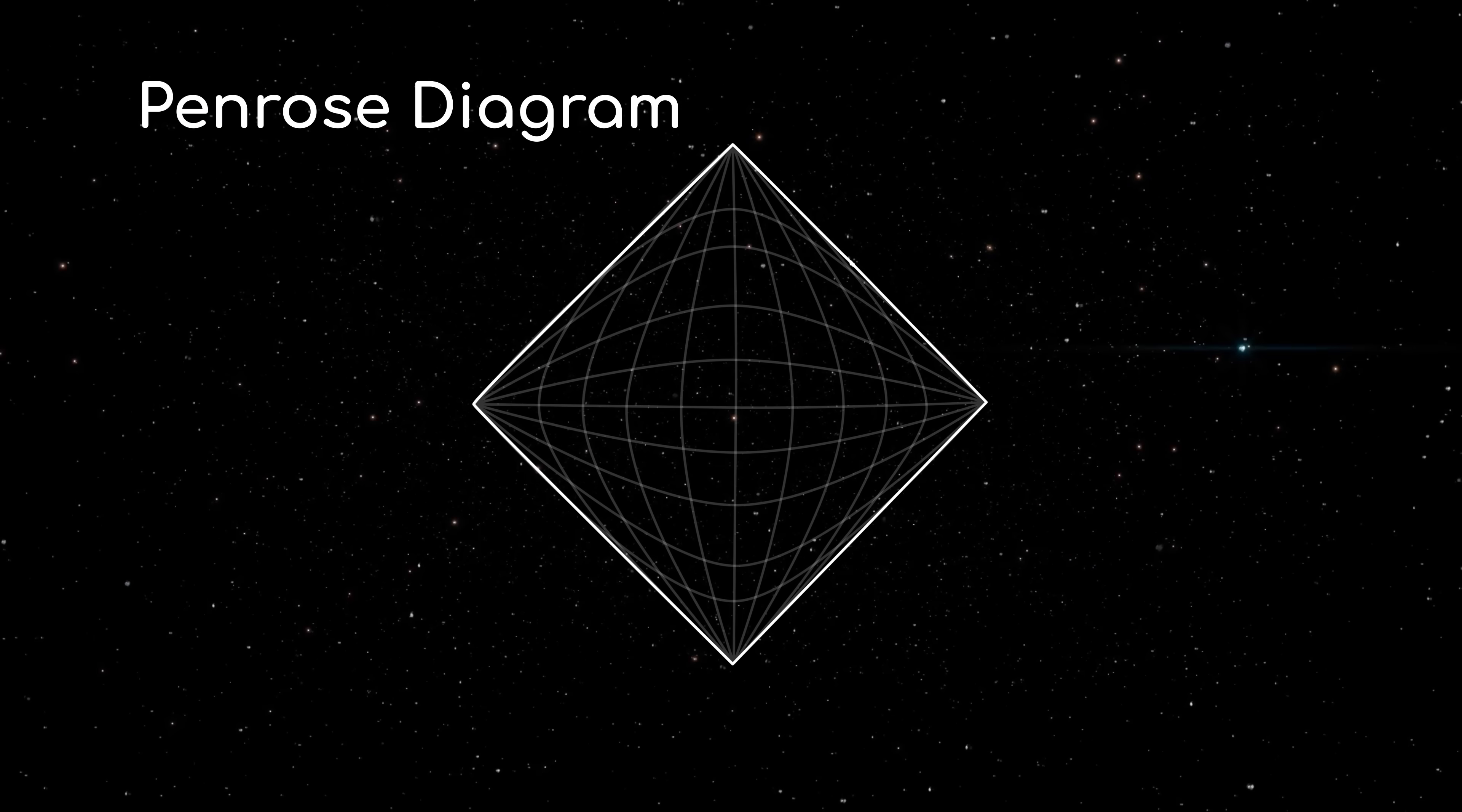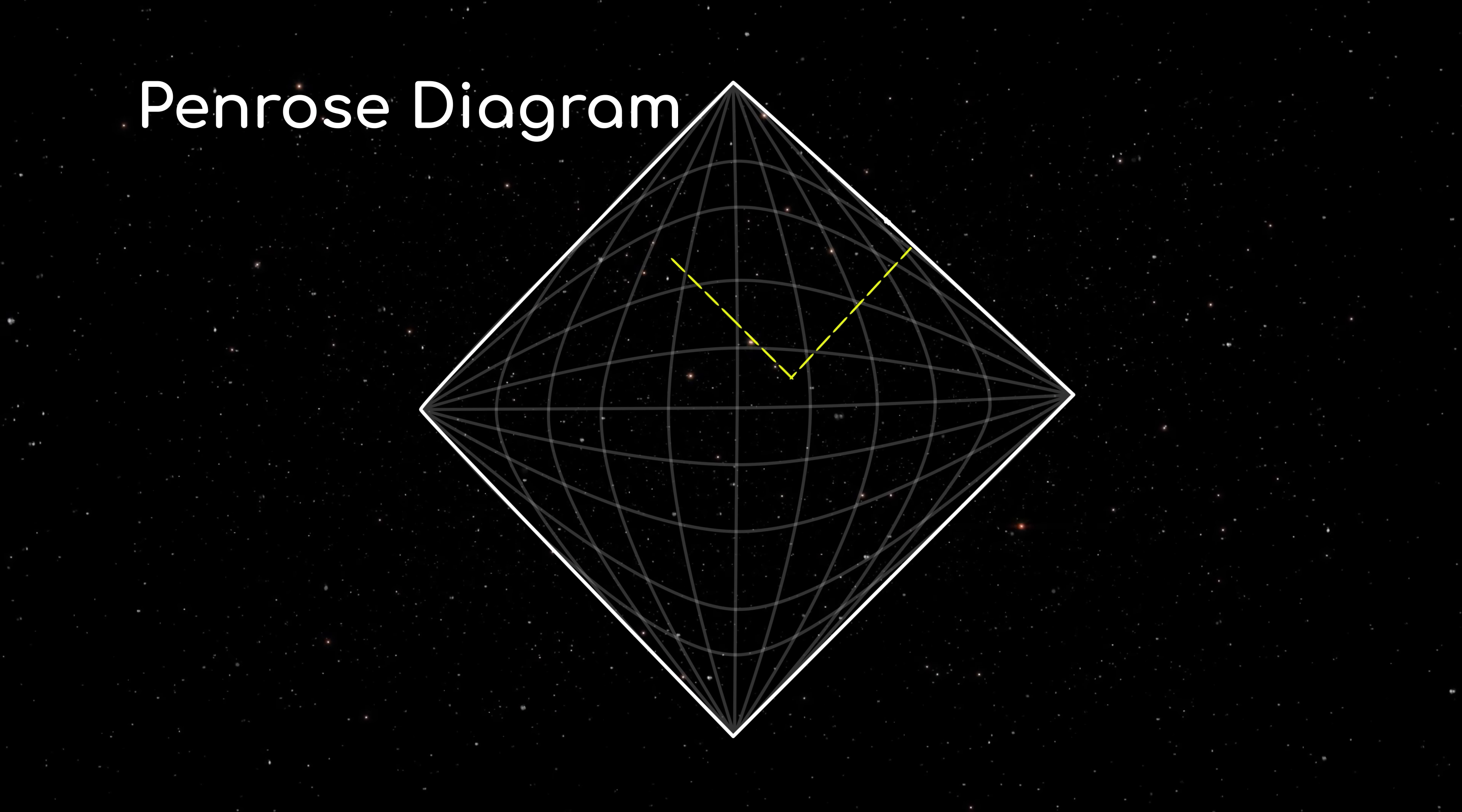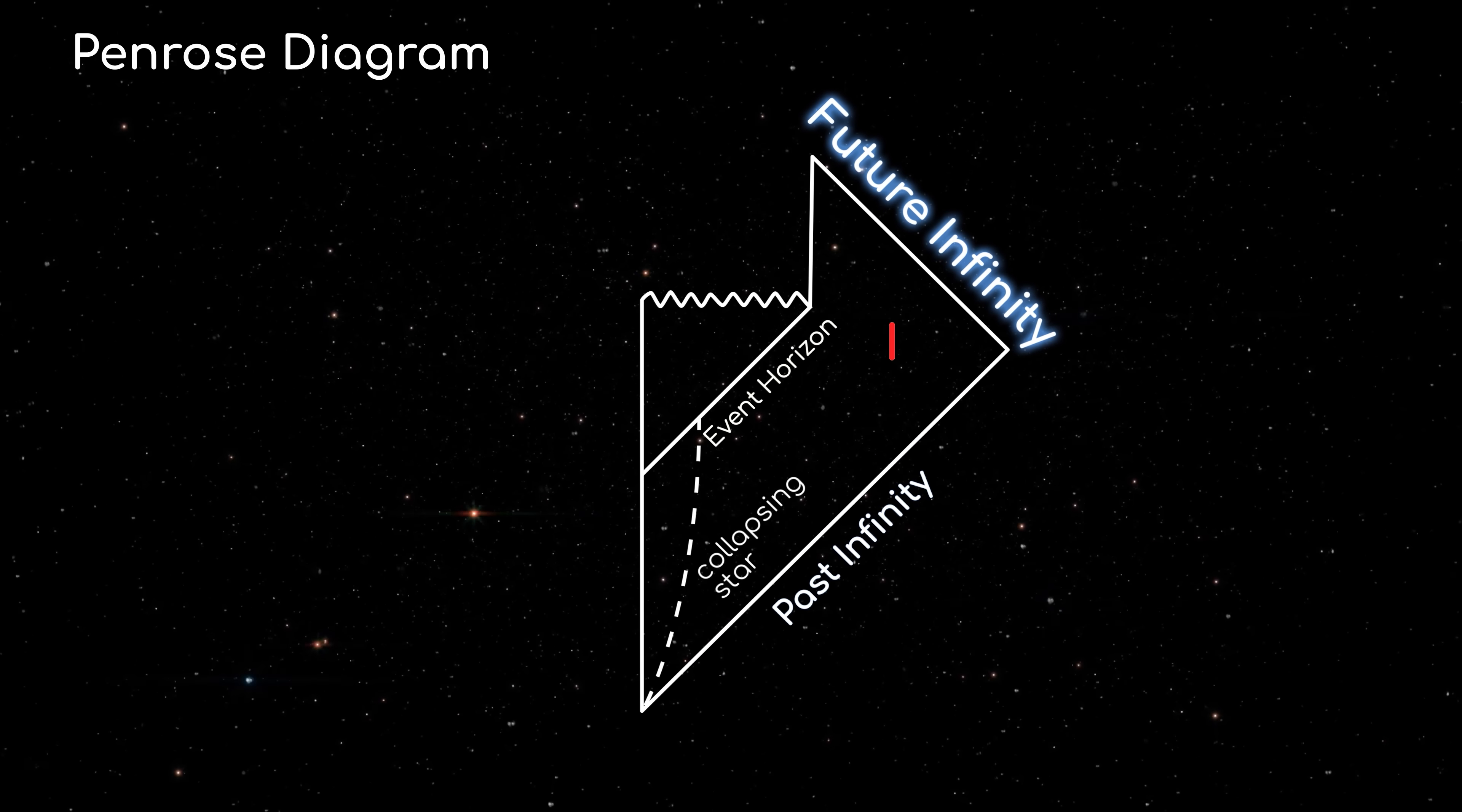This structure of spacetime can be neatly summarized in what physicists call the Penrose Diagram, which is a way of representing an infinite spacetime in a finite drawing. The key feature of a Penrose Diagram is that light travels upwards at 45 degree angles, making it easy to distinguish regions where light can or cannot enter. In this diagram, region 1 is the regular universe, containing the original star before it turned into a black hole, and everything outside it, from the infinite past to the infinite future.